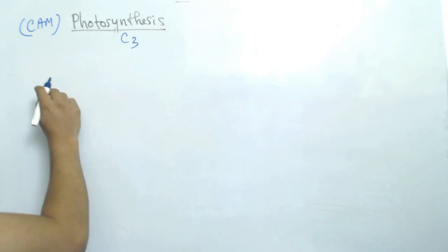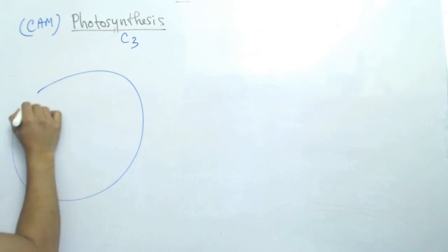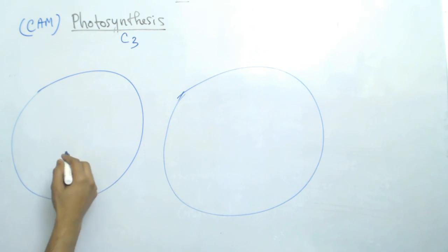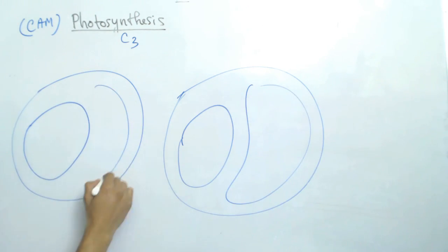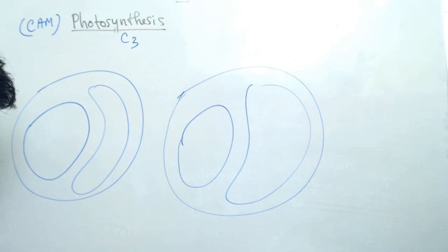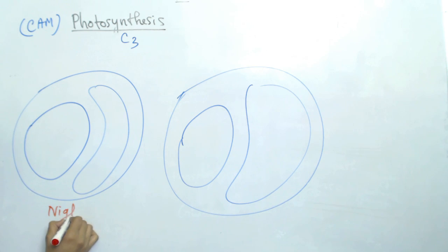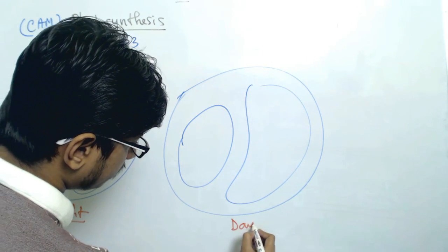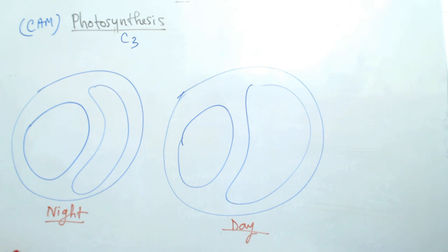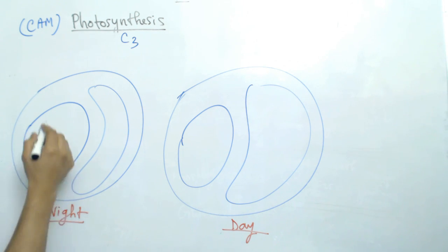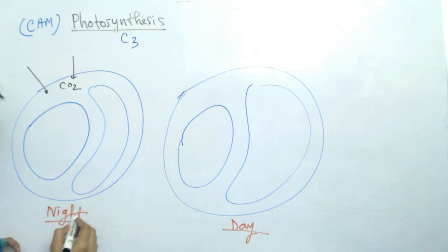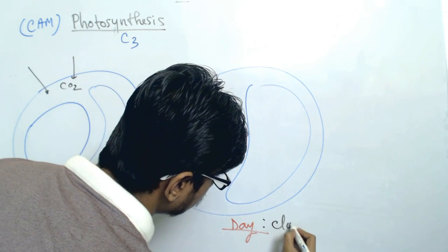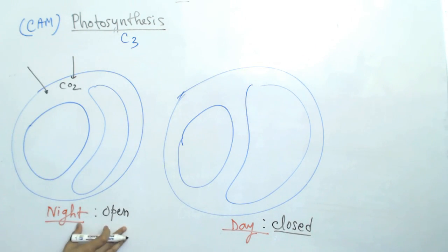Let me draw two situations here — nighttime and daytime. In both situations we have the chloroplast and also the vacuole. The idea is: what happens at nighttime versus what happens at daytime? In the nighttime, we know that carbon dioxide is available because stomata are open at night and closed during the day.